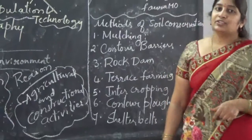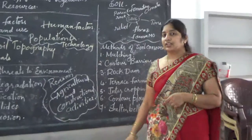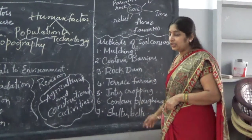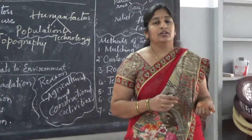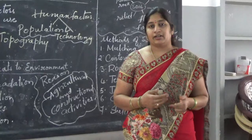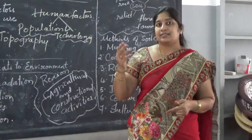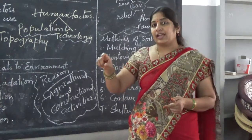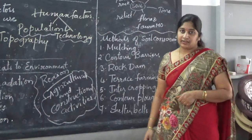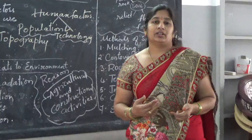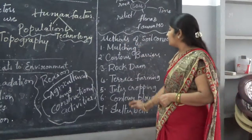Next is contour ploughing, one of the common conservation methods similar to how contour barriers work. Then, shelter belts. Shelter belts are done in coastal areas or dry regions where huge trees like coconut trees or other tall lengthy trees are grown on the coastal areas as counter barriers. This is mostly suitable in coastal areas like Kerala and Tamil Nadu. Wherever vegetation is possible in coastal areas, these shelter belts are used. These are the methods of soil conservation.